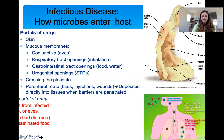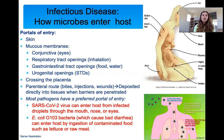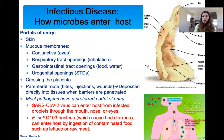Almost all pathogens have a preferred portal of entry. For example, HIV does not enter through the gastrointestinal tract — if you put HIV on food, you won't get it that way. Every organism has a preferred portal of entry. With SARS-CoV-2, its preferred portal of entry is through the mouth, nose, or eyes. That's why they're telling people to wash your hands and don't touch your face — this is how this virus enters.